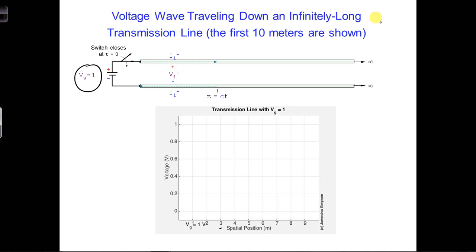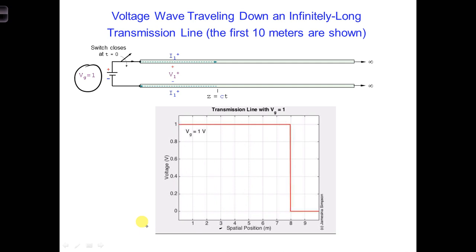At time t equals 0, the switch closes and the generator is connected to the transmission line. This launches the voltage wave that you can see here.